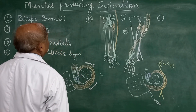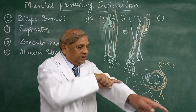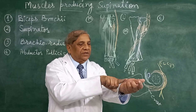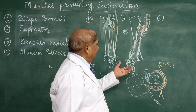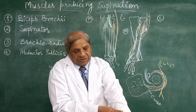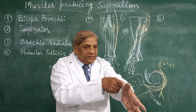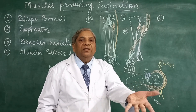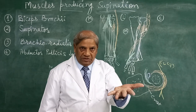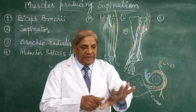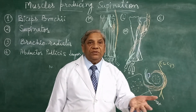The fourth muscle producing supination of the forearm is the abductor pollicis longus. This comes from the posterior compartment, runs onto the lateral side of the radius, comes slightly forward, and is attached to the base of the first metacarpal bone. In the pronated position, this muscle is quite twisted. When it contracts, it tries to pull the lateral border and thumb — which is now medial — towards the lateral side. Though it is not attached to the radius but to the first metacarpal bone, it will rotate the hand laterally, along with which the lower end of the radius also rotates laterally.